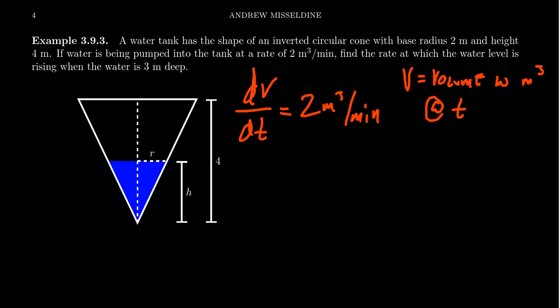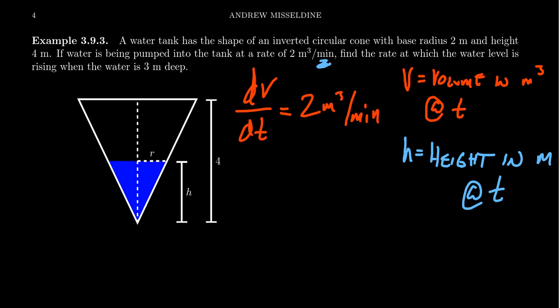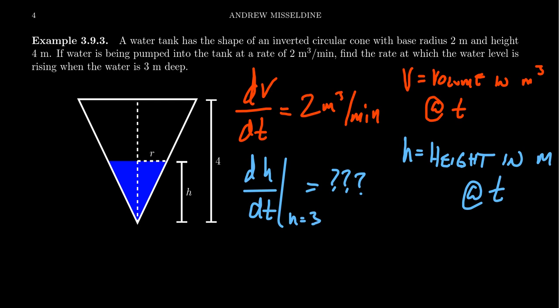Let h equal the height of the water, measured in meters at a given moment of time. Time t is measured in minutes. We know dV/dt, and we want to know how fast the height is increasing — that's dh/dt. Specifically, we need to find dh/dt when the height is equal to 3 meters.